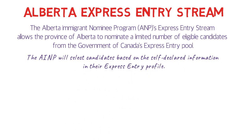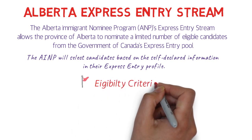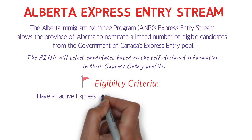AINP does not have its own scoring system — unlike Saskatchewan or British Columbia. They pick profiles directly from the Express Entry pool, similar to Ontario's Human Capital Priority stream. There is no separate portal where you create a profile for the Alberta Express Entry Stream; Alberta picks the profiles from the Express Entry pool themselves.